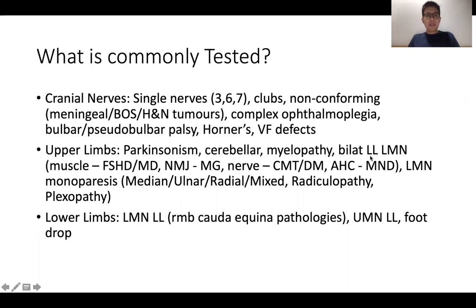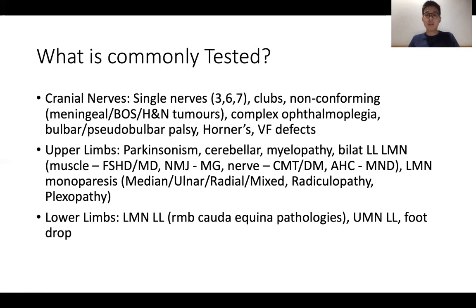I always like to begin by reminding everyone of what is commonly tested, because at the end of the day this is an exam and knowing what comes out is half the battle. I've broken this down into cranial nerves, upper limbs, and lower limbs. For cranial nerves, you could get single nerve pathologies — commonly 3, 6, and 7 — clumps like superior orbital fissure or cavernous sinus lesions, non-conforming cranial nerve pathologies such as meningeal disease, base of skull disease, head and neck tumors with previous surgery, complex ophthalmoplegias, bulbar and pseudobulbar palsies, Horner's, and visual field defects.